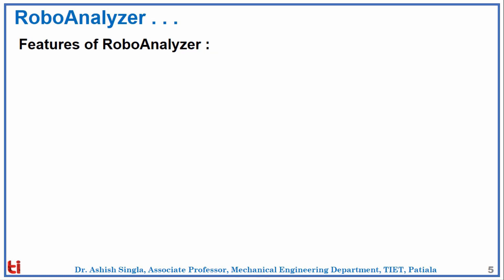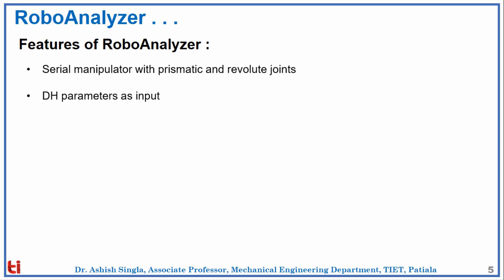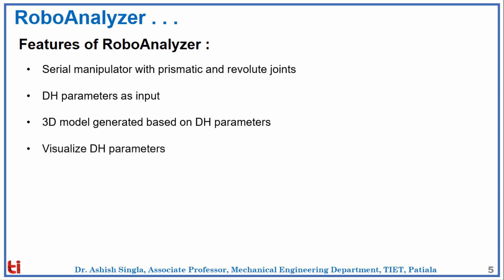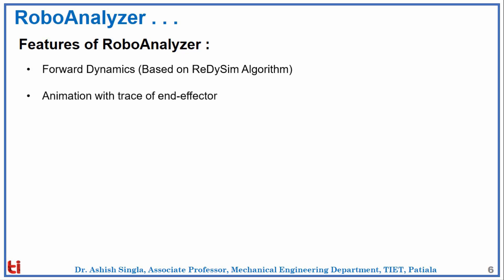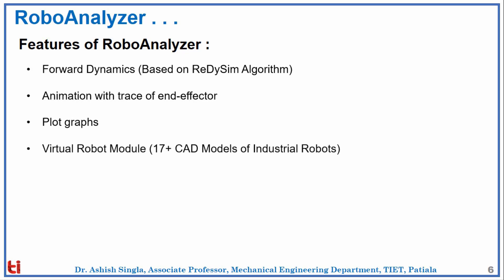RoboAnalyzer aims to ease out the difficulties for students as it gives 3D visualization of the robot with animation. Features include: serial manipulator with prismatic and revolute joints, DH parameters as input, 3D model generation and visualization based on DH parameters, forward kinematics, inverse kinematics, inverse dynamics, forward dynamics, animation with trace of end effector, graph plotting, a virtual robot module, and save/open robot models.